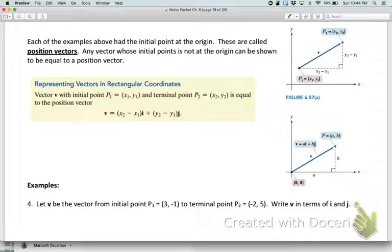Because again, we can translate those anywhere and they're still going to be equal. As long as we just subtract the difference between the x's and subtract the difference between the y's, that will convert this to a position vector.